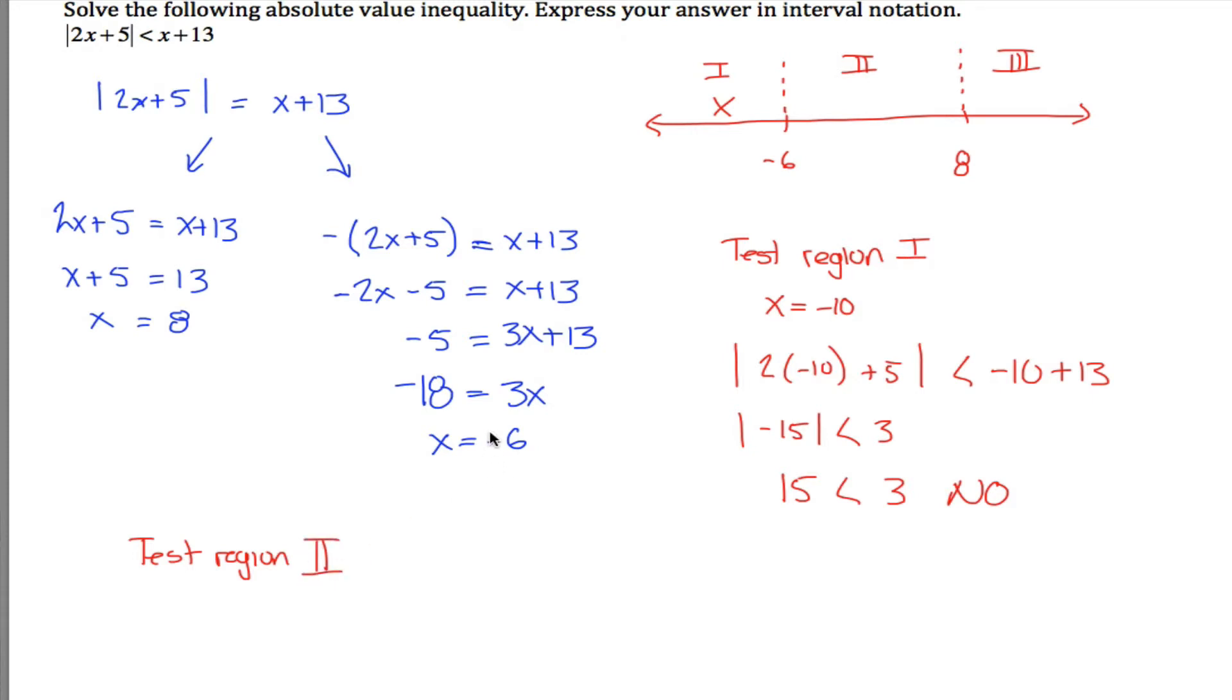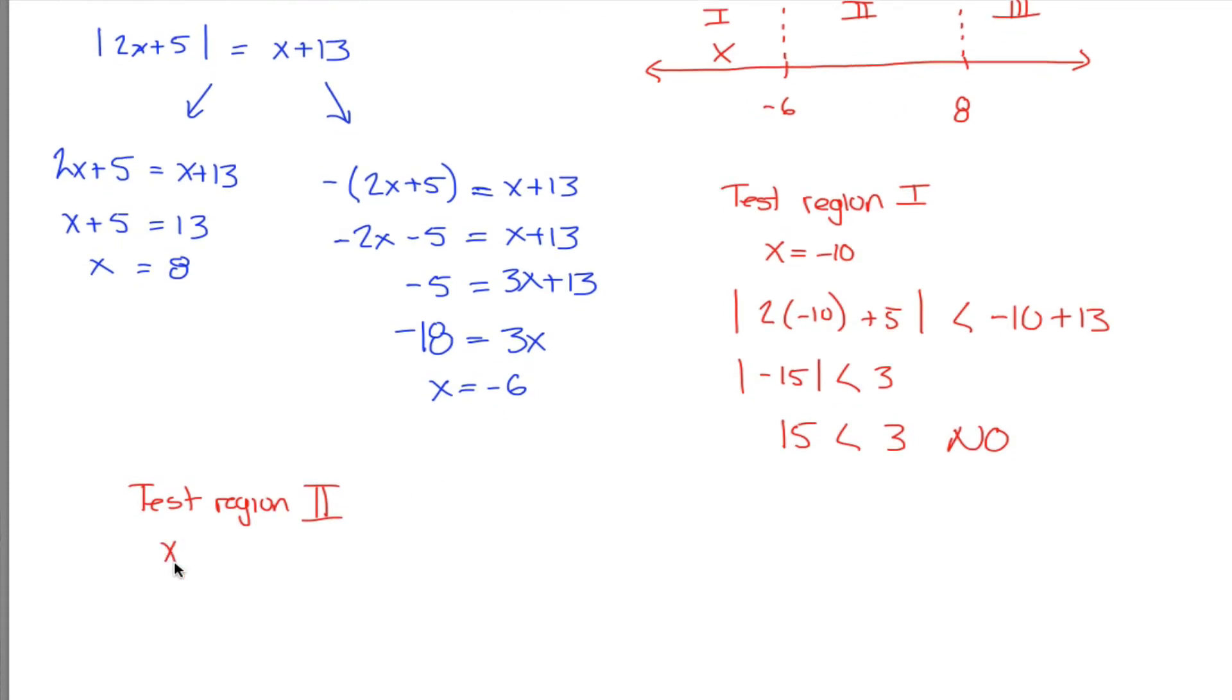What about region 2? Pick any number in region 2, any number between negative 6 and positive 8. I like 0. Question is, is 2 times 0 plus 5 absolute value less than 0 plus 13?